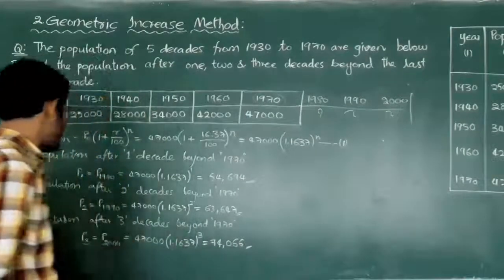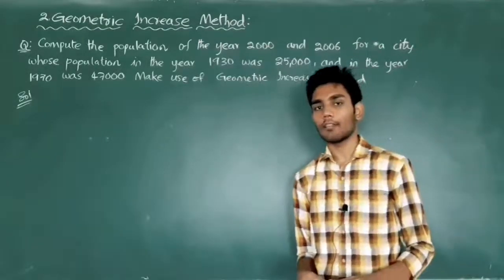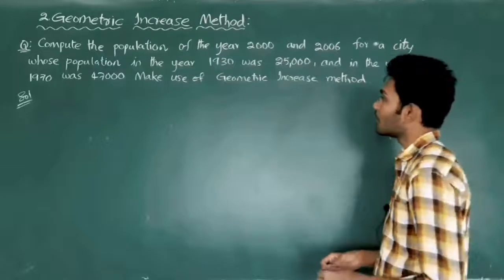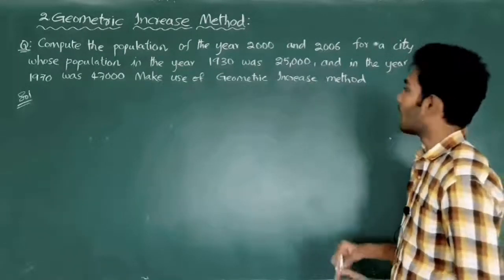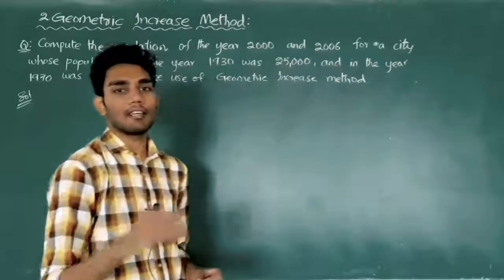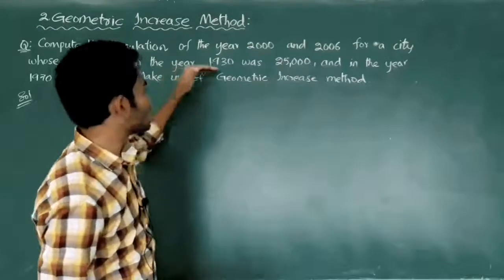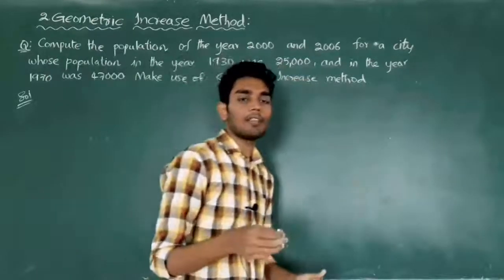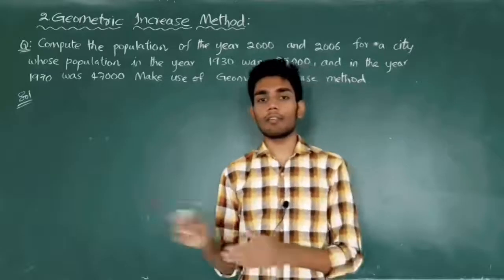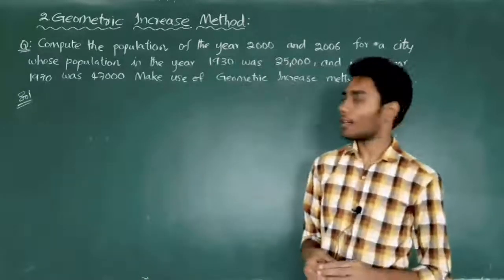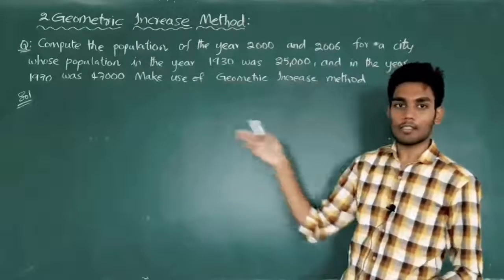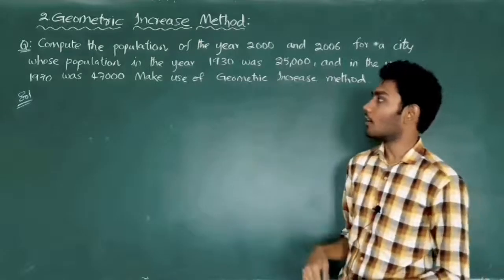Now let us see one more problem based on the geometric increase method. The question: compute the population for the year 2000 and 2006 for a city whose population in 1930 was 25,000 and in 1970 was 47,000, using the geometric increase method. In this question very less data is given — only the population in 1930 and 1970. The intermediate census data has not been given.